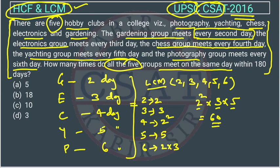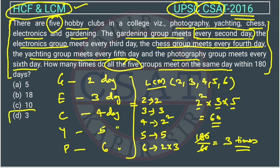So all five groups will meet on the 60th day. To find how many times in 180 days, divide 180 by 60, which gives 3. So they will meet 3 times within 180 days. The answer is option D.